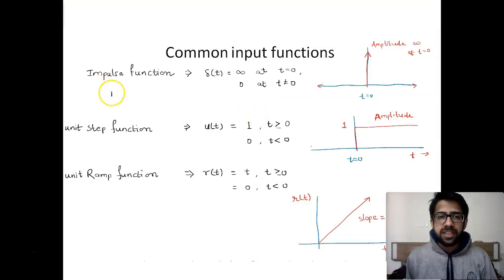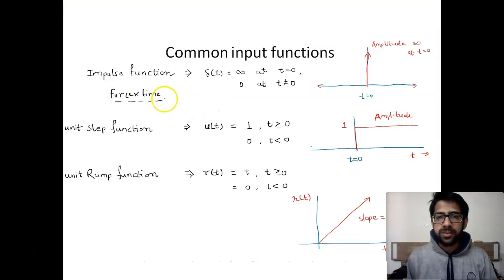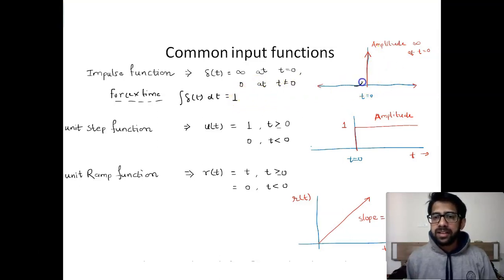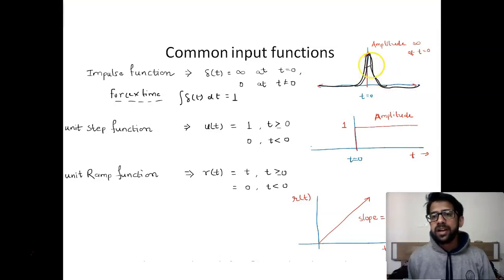The impulse function is nothing but force into time — this is the dimension of any impulse force. Delta(t) can also be modeled such that the integration of delta(t) dt equals 1. So the area under this particular input graph is 1. This is how the impulse function is distributed along t equal to zero, and the area under this curve is taken as equal to 1.